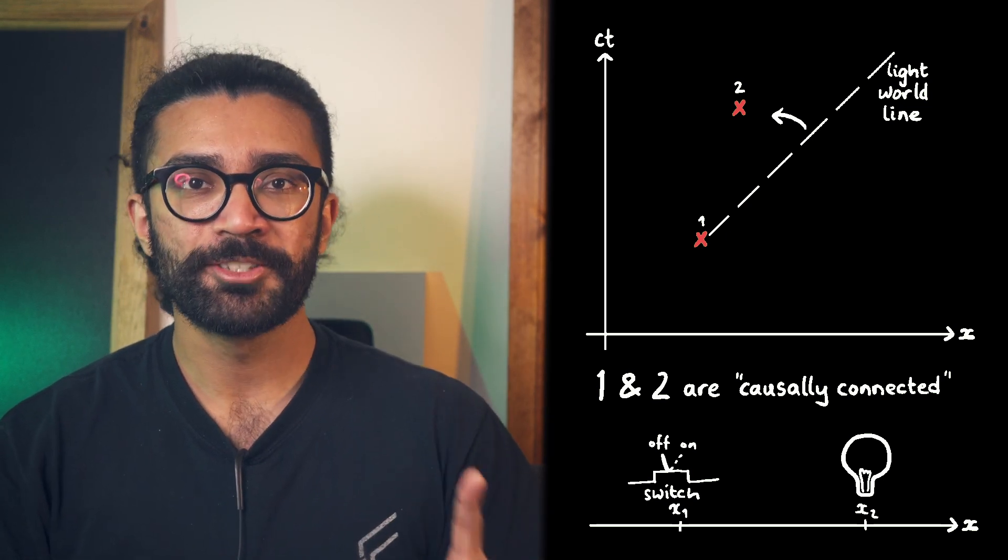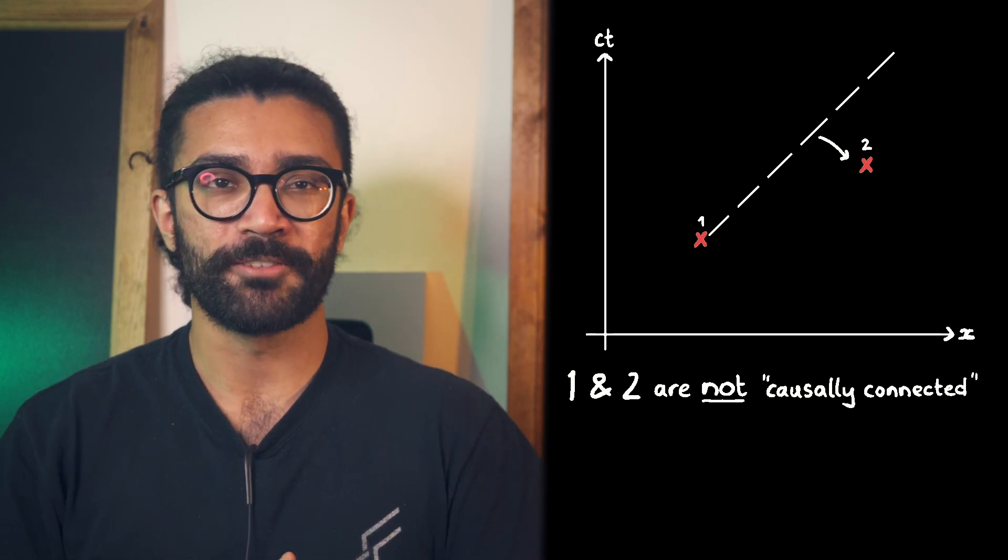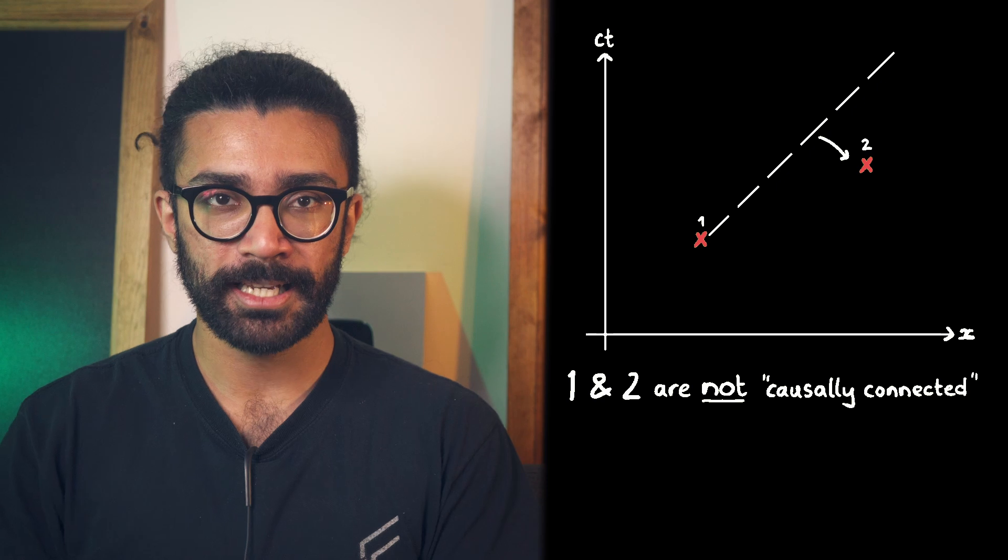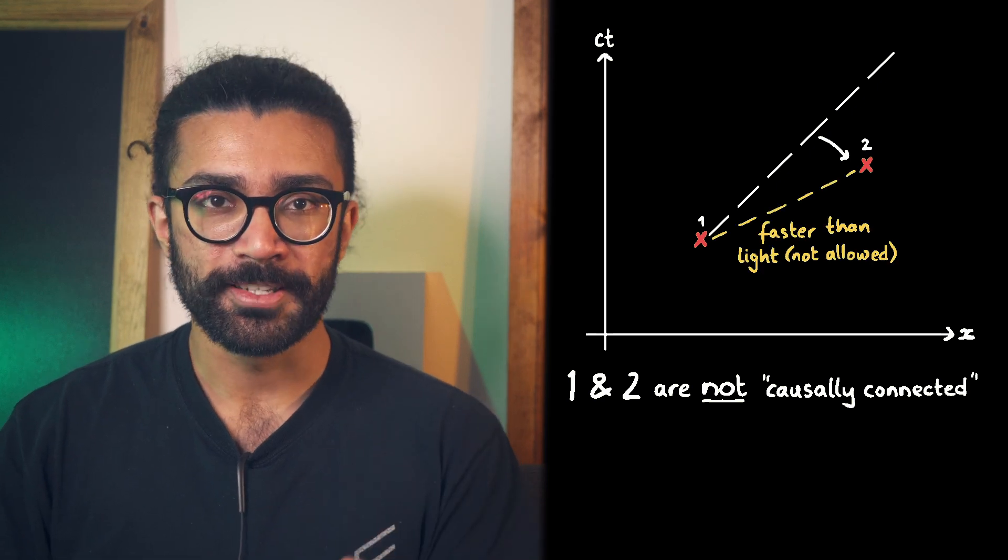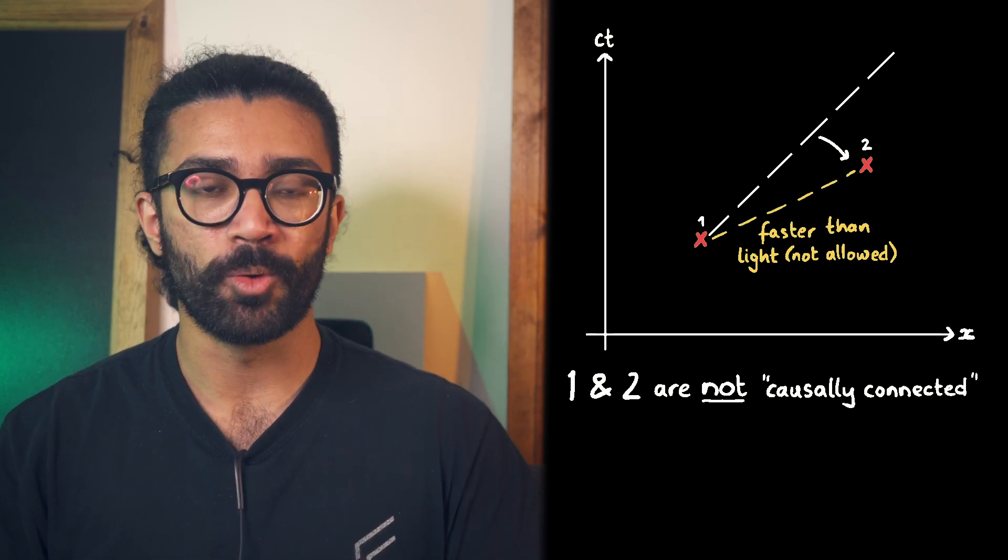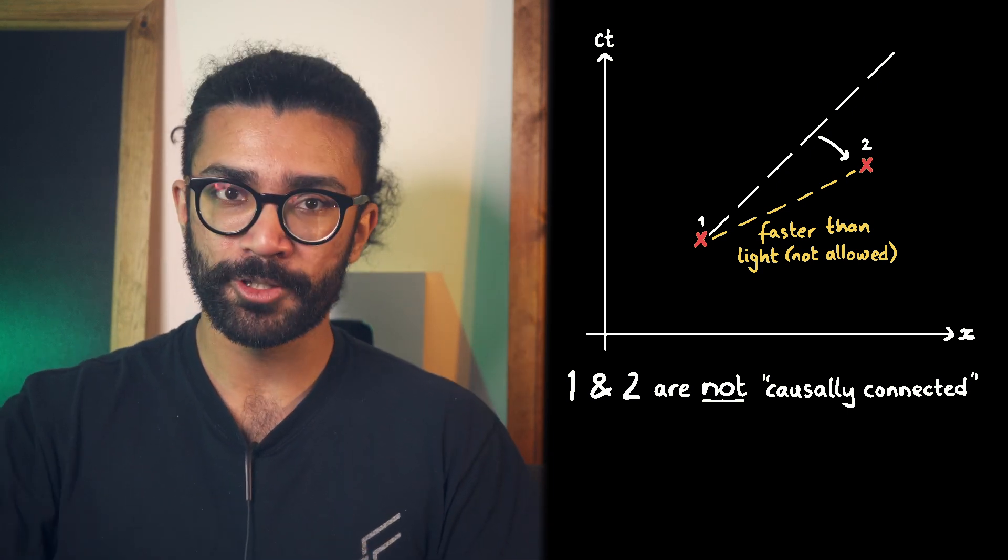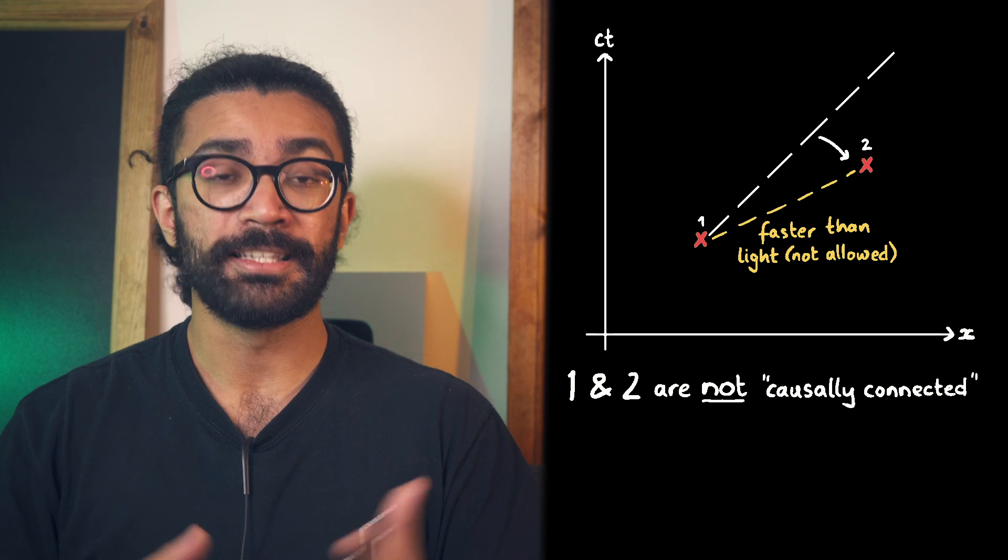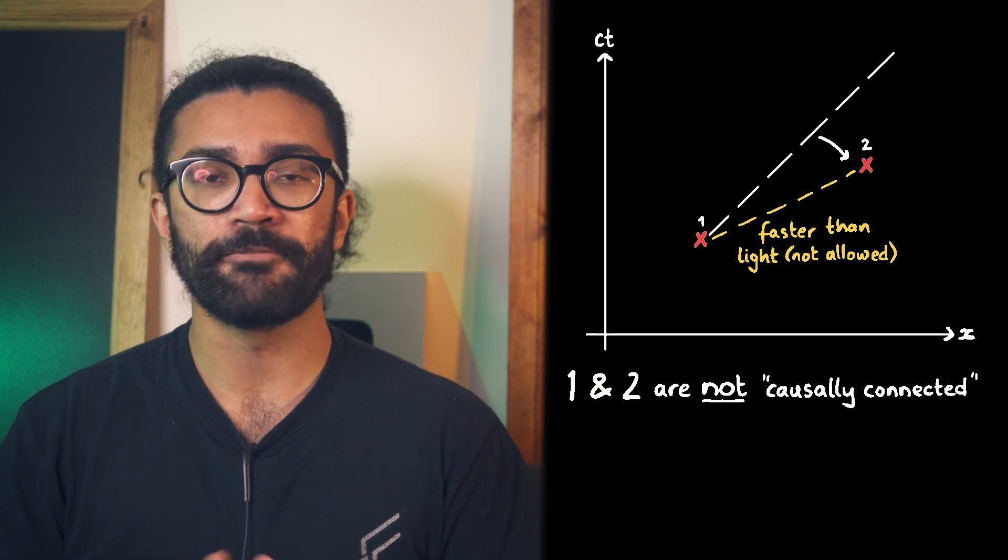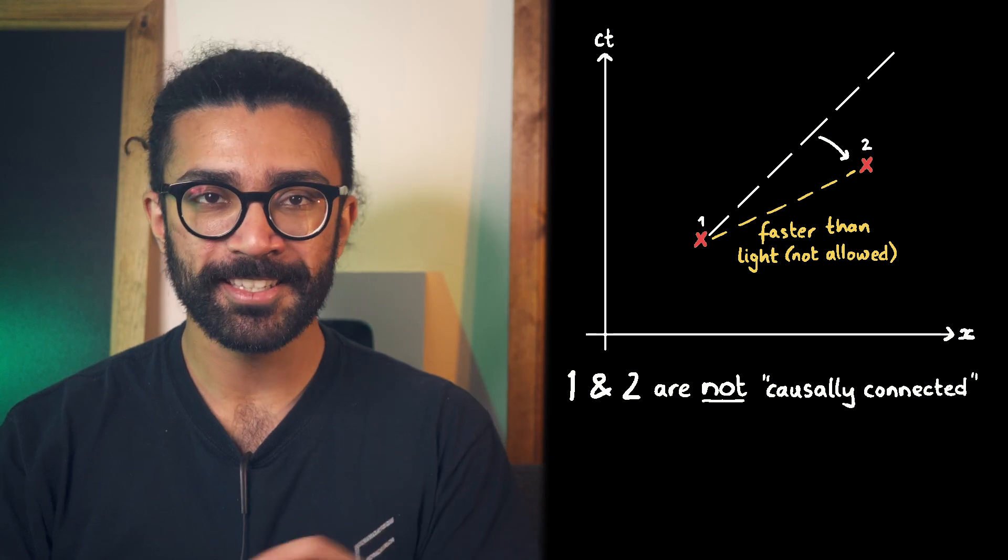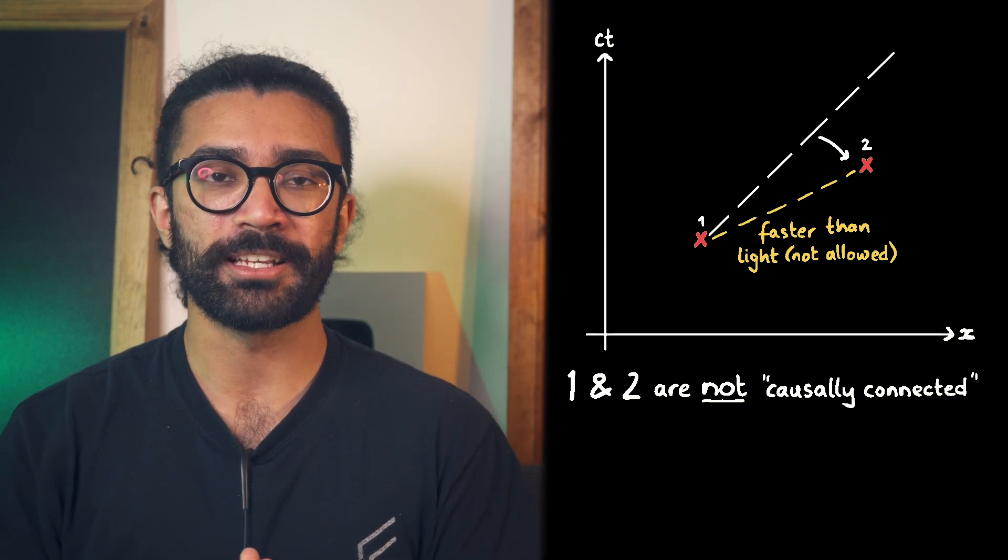However, if event two was on this side of our 45 degree line, then there is no way that these two events are causally connected. Nothing in the universe can move fast enough for event one to happen and then for a signal to be sent to two and then for two to happen. In other words, these events are independent events. They have nothing to do with each other. And so this is one thing that we can very easily figure out from just looking at a space-time diagram.